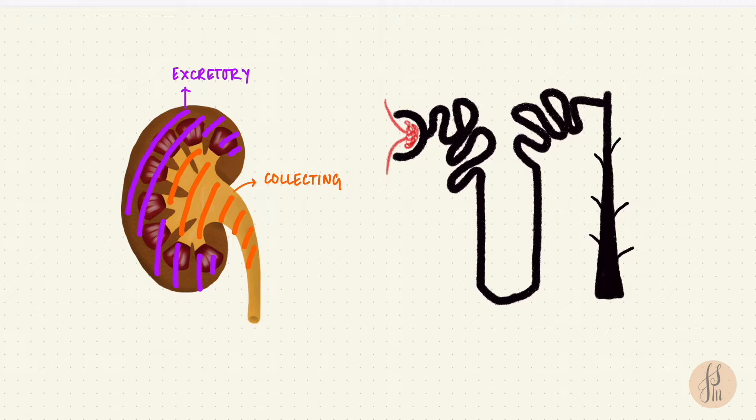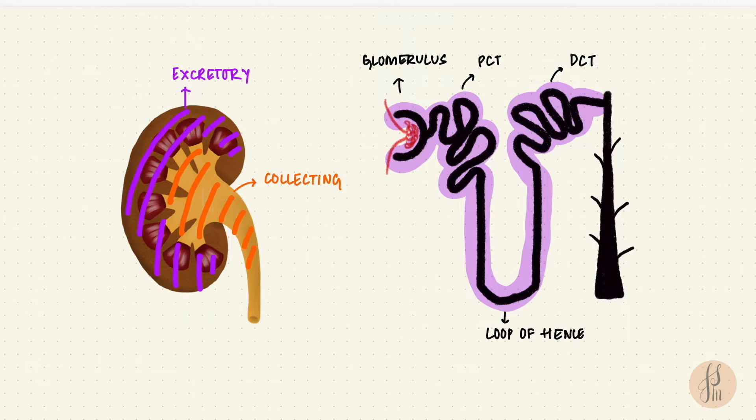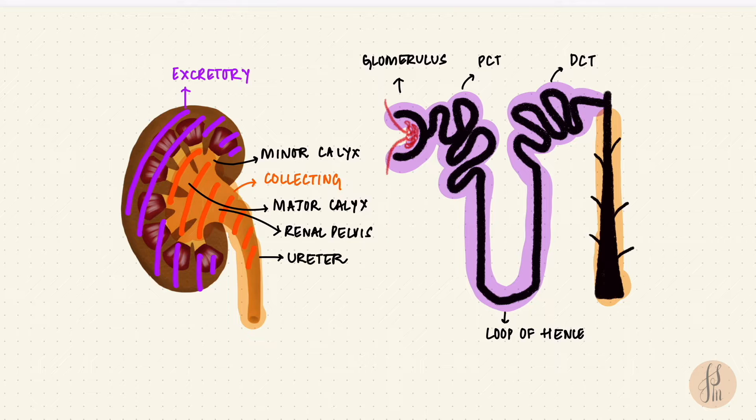The excretory portion of the nephron starts from the glomerulus, then the proximal convoluted tubule, the loop of Henle and the distal convoluted tubule. The collecting system is the collecting ducts and tubules which form the minor calyces, then the major calyces, the renal pelvis which continues down as the ureter which is going to empty into the bladder.